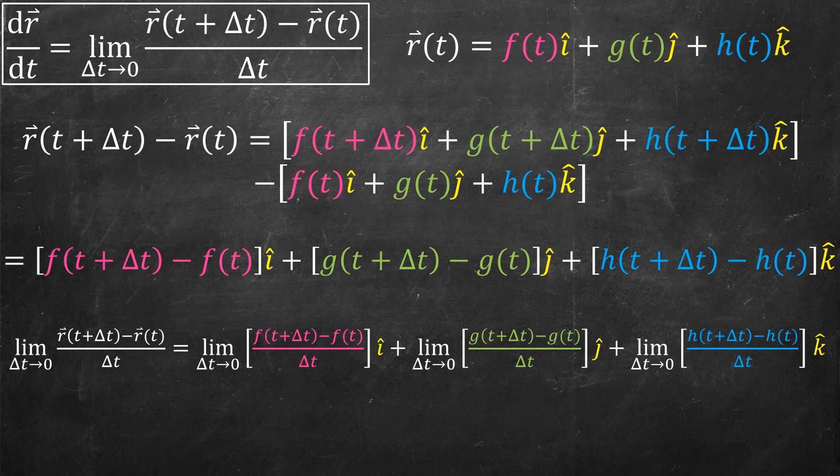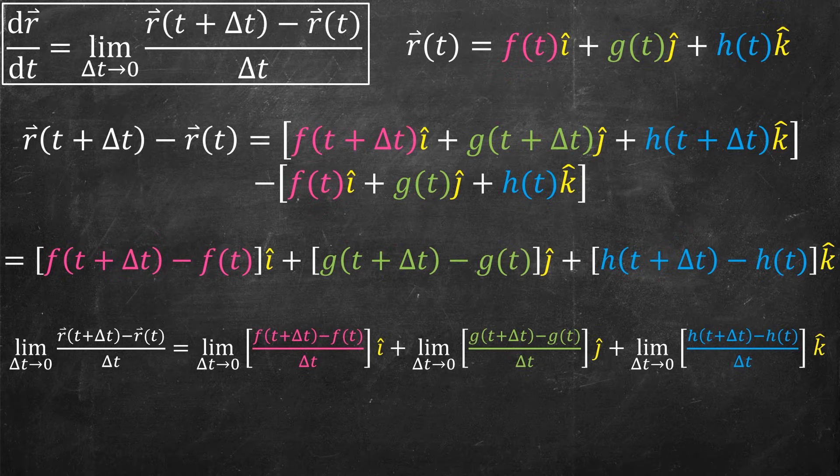So first I have the limit as delta t goes to zero of f of t plus delta t minus f of t divided by delta t. That's the one in the i-hat direction. Then I have an analogous one in the j-hat direction and an analogous one in the k-hat direction. So basically I've just taken my limit definition and written it out, but breaking it up into the three different components.